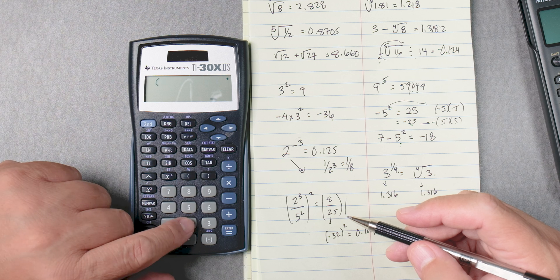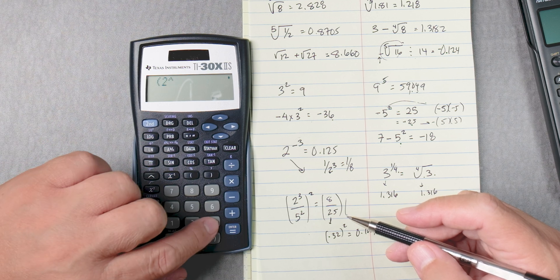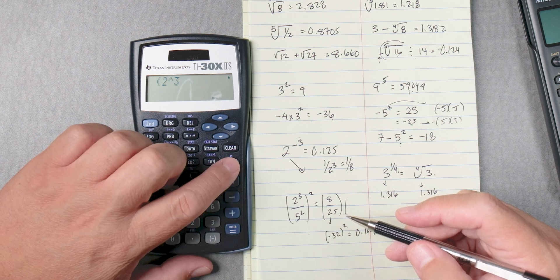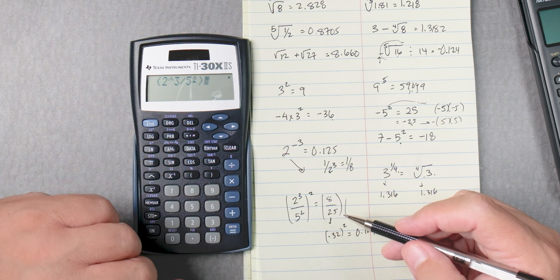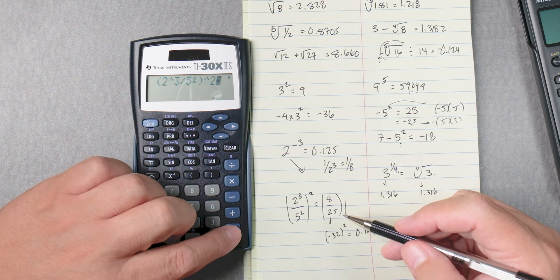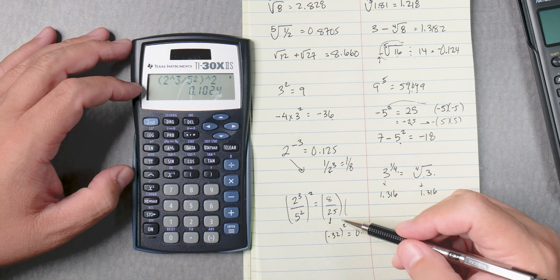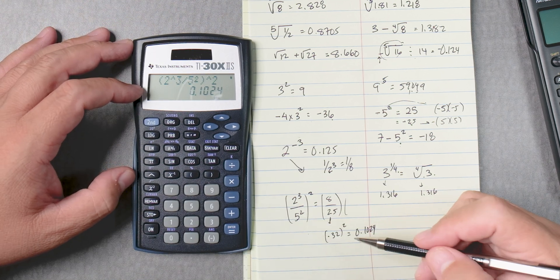Let's do it this way, parentheses, 2 to the 3rd power, right? Divide it by 5 squared, close it, and then carat, 2, equals, there we go. Probably the ABC button doesn't work very well.